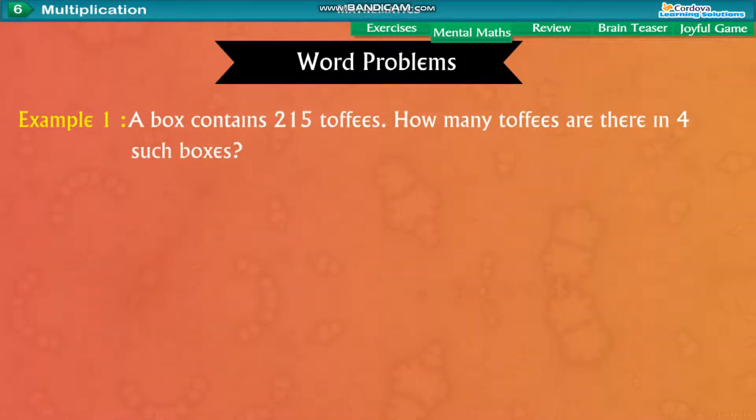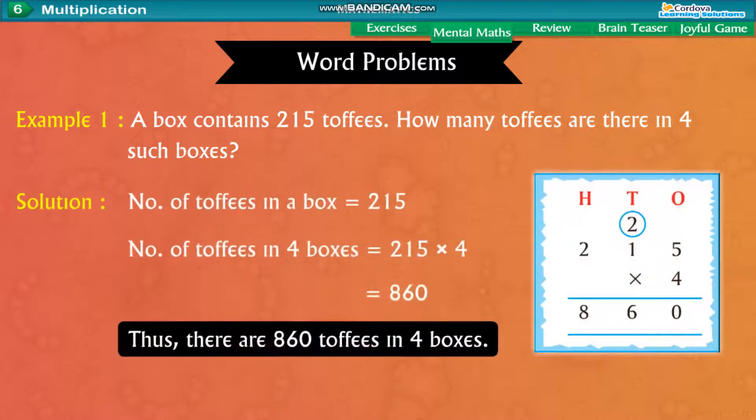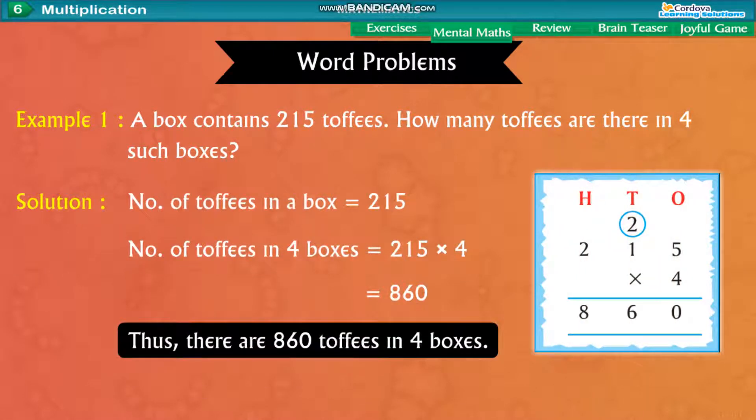Word problems. Example 1. A box contains 215 toffees. How many toffees are there in 4 such boxes? Solution. Number of toffees in a box equal to 215. Number of toffees in 4 boxes equal to 215 into 4 equal to 860. Thus, there are 860 toffees in 4 boxes.